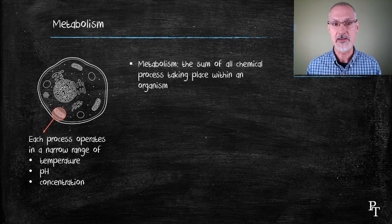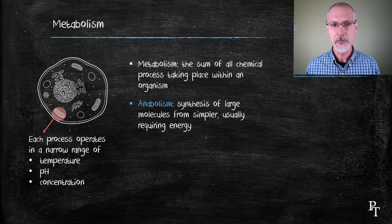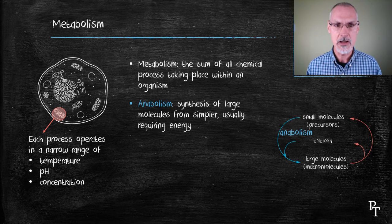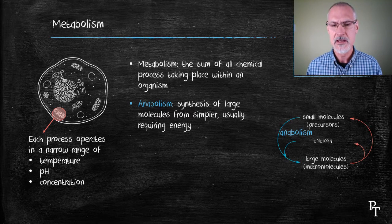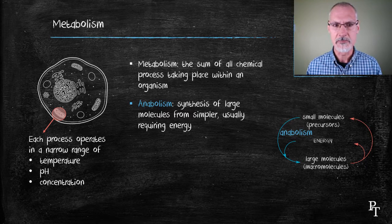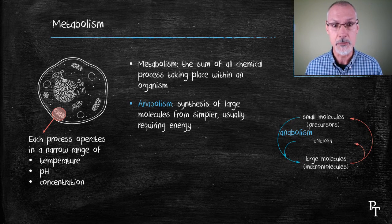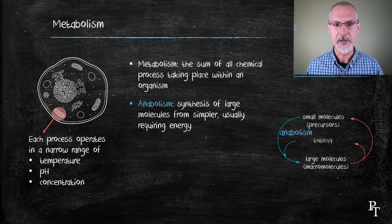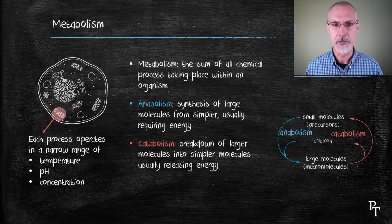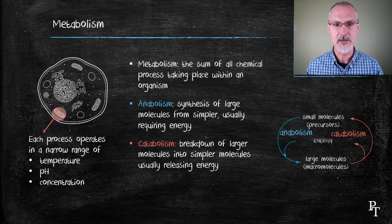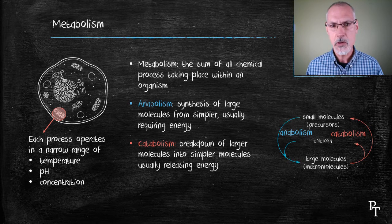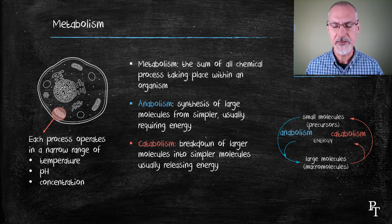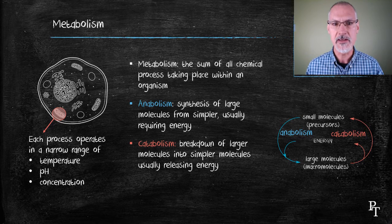Metabolism itself breaks down into two categories. Those processes that build more complex molecules, we call that an anabolic reaction or anabolism. Here I've shown a diagram of what that represents, starting with small molecules, called precursors, building into larger macromolecules. The reverse process, where we take larger molecules and break them back down, we call catabolic reactions or catabolism. They both happen in harmony with each other, whereby the energy that's generated by the catabolic process can be used by the anabolic process.